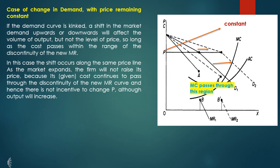The AB portion of the demand curve creates the kink. The cost curve should pass within the range of the discontinuity of the MR curve. The demand curve at the same price line confirms price stickiness in the kinked demand model.